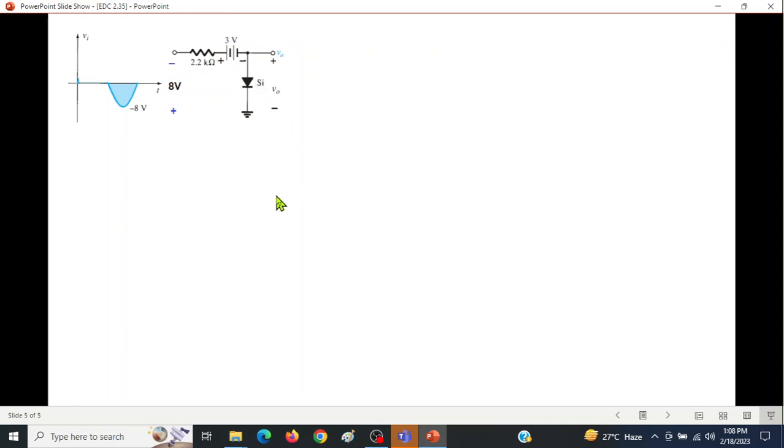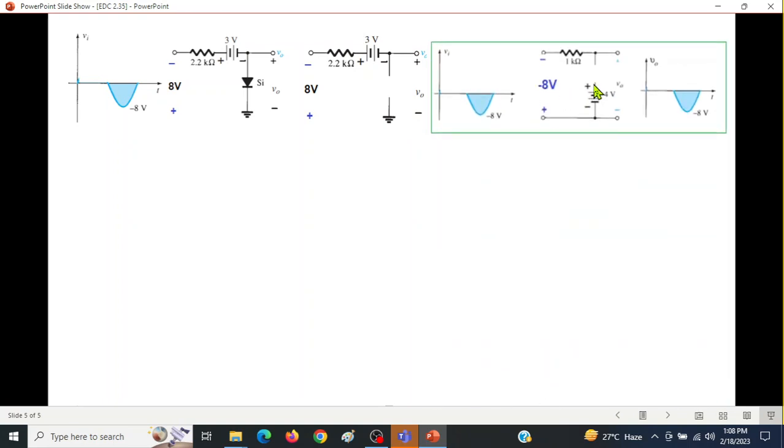The open circuit - now the output, while writing the output we have to be careful here. In the previous example we said that when it is an open circuit whatever is the input that will be the output, but here the input is not only this 8 volt signal, rather it also includes a 3 volt battery. This whole is the input, so it is better that we write the KVL equation.